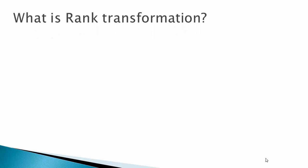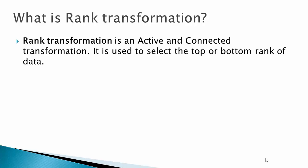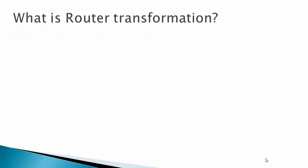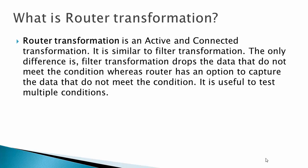Rank transformation is an active and connected transformation. It is used to select the top or bottom rank of data. Router transformation is an active and connected transformation. It is similar to filter transformation — the only difference is that filter drops data that does not meet the condition, whereas router has an option to capture that data. It is useful to test multiple conditions.